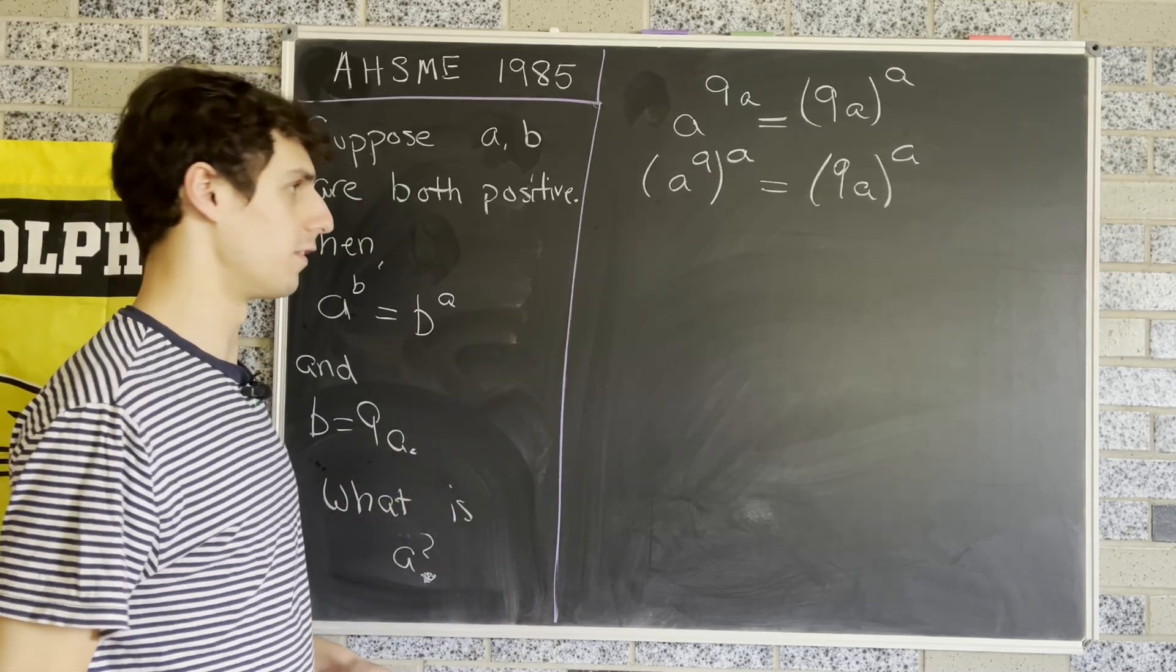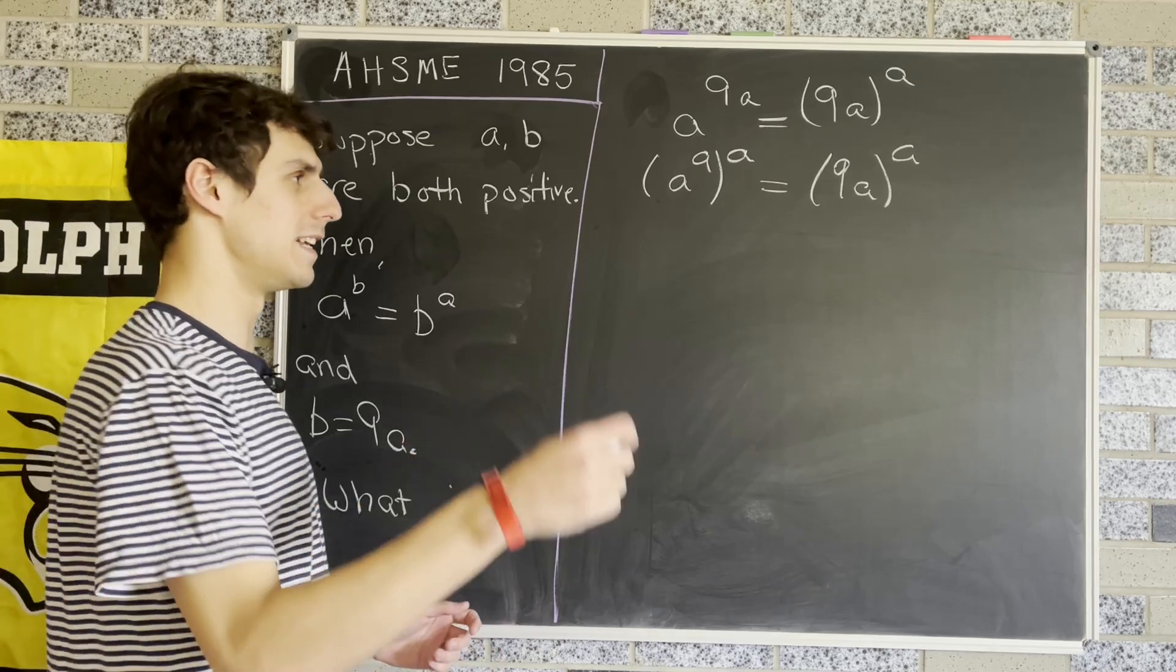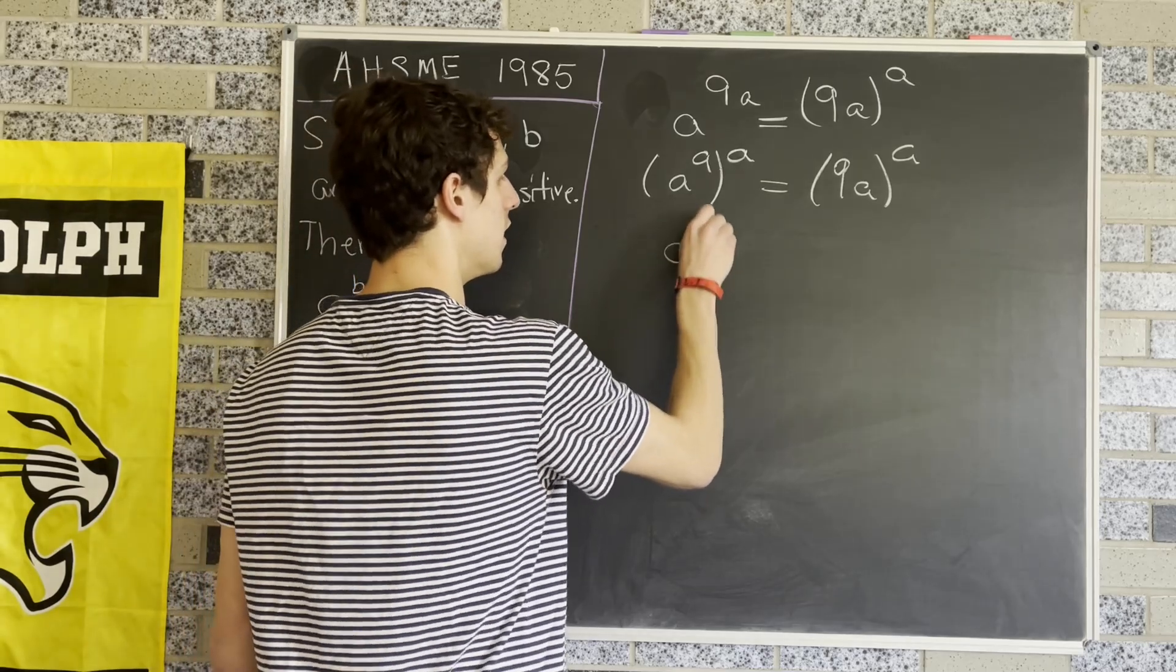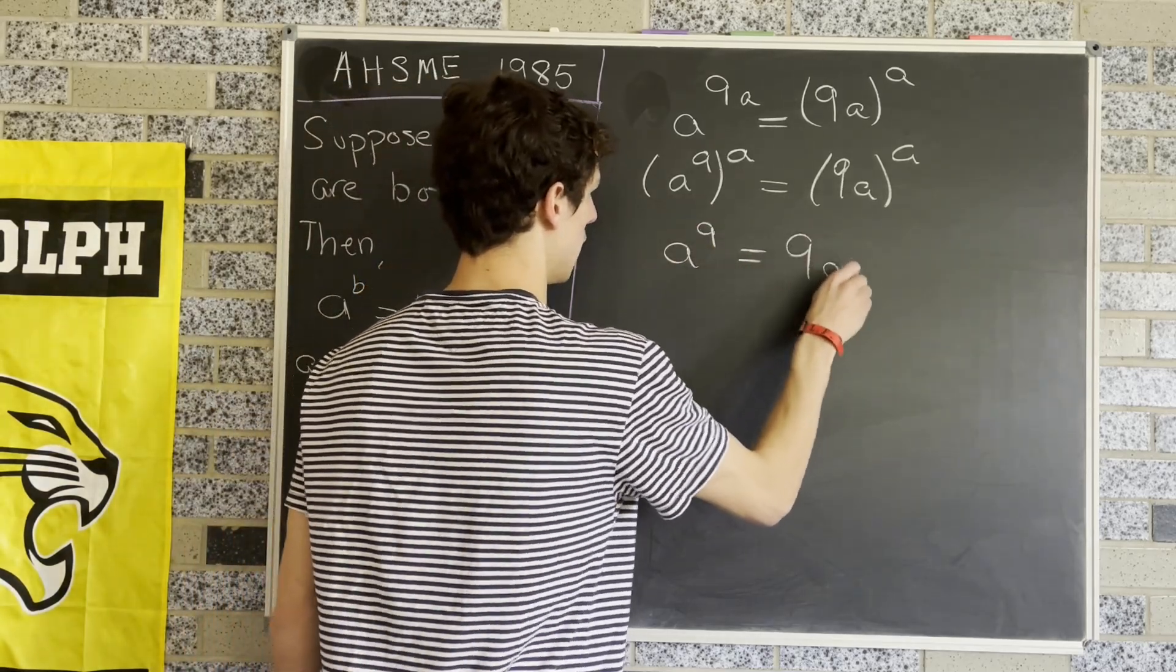So we'll take the A-th root of both sides—not the 8th root, but the A-th root—which gives us A^9 = 9A.